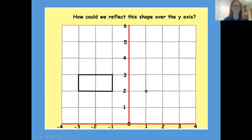So minus 1, 3. Again, along the bottom, 1, 3, and plot it. Minus 3, 3. So again, 3, 3. And then finally, minus 3, 2, and exactly the same — go along my x-axis to 3, up to 2, and then join it together.